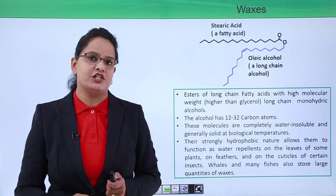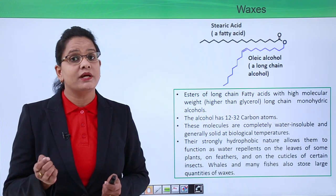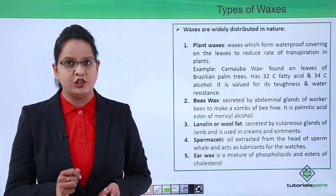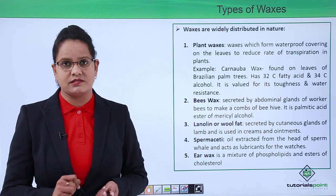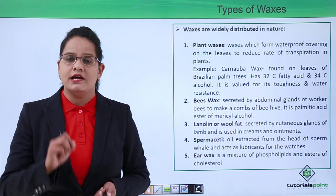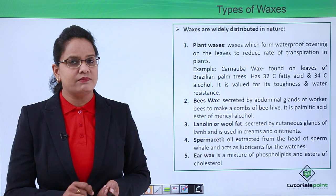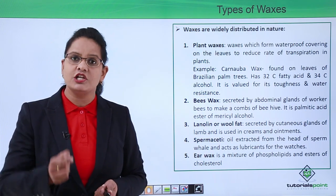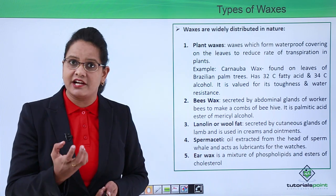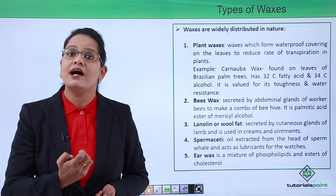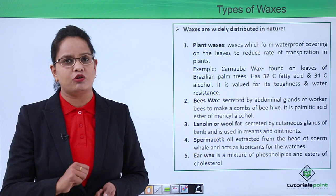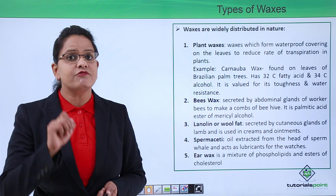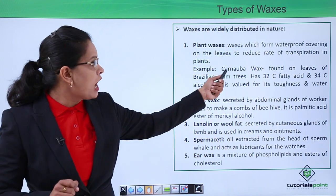Let us see how many types of waxes are there. Waxes are widely distributed in nature. First is plant wax. Wax coats the layer of the leaf so the leaf does not become turgid on absorption of water. Rather, excess water flows out. A special type of wax obtained from palm tree is carnauba wax, obtained from Brazilian palm tree. It has around 32 carbon fatty acid and 34 carbon alcohol. Carnauba wax is very tough and used as a glazing agent.